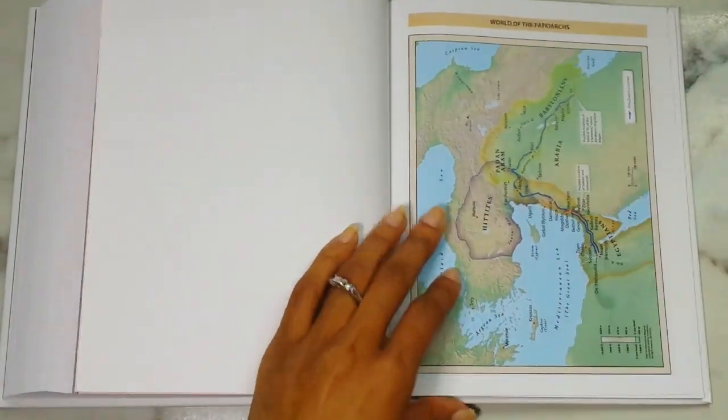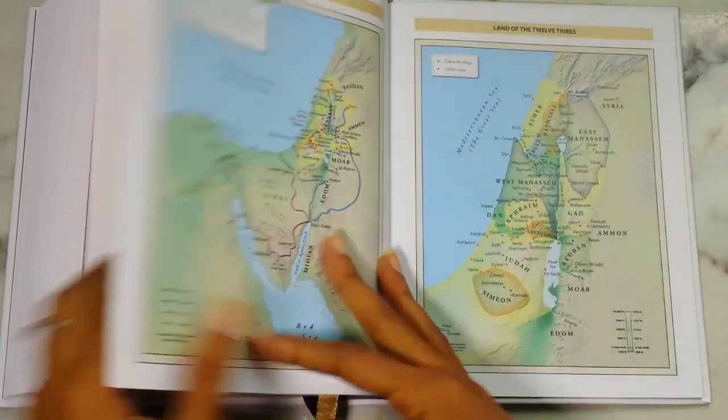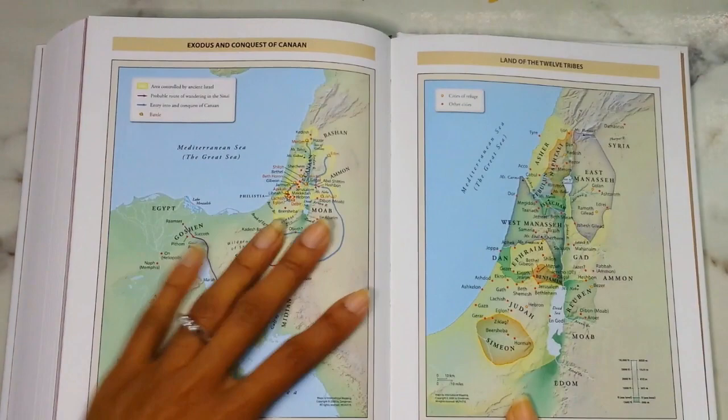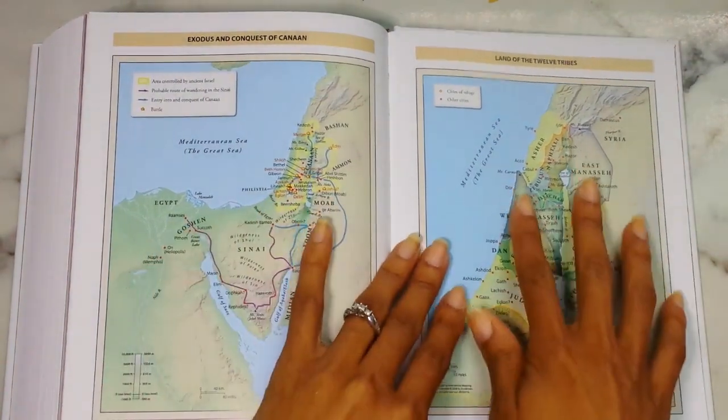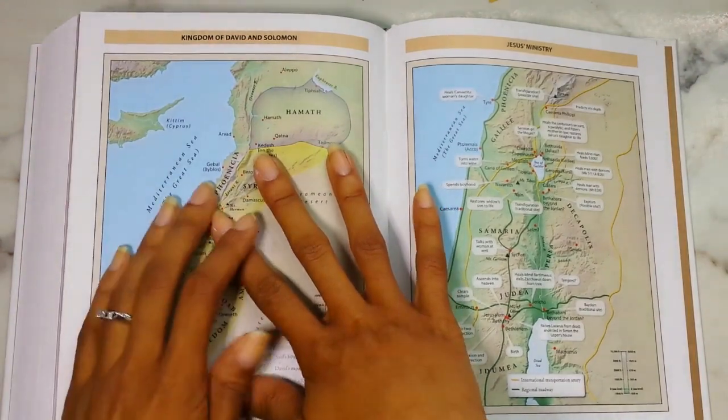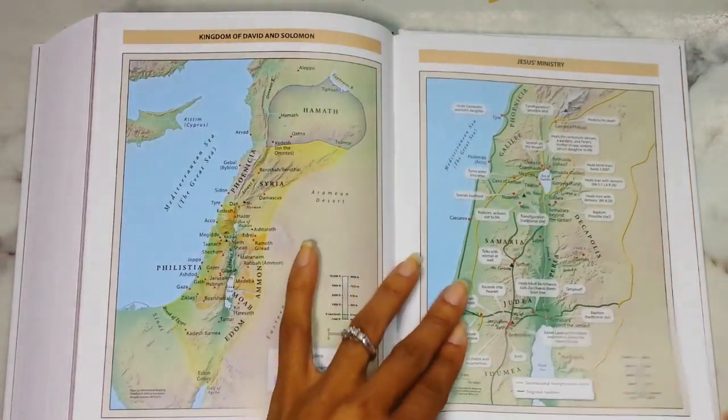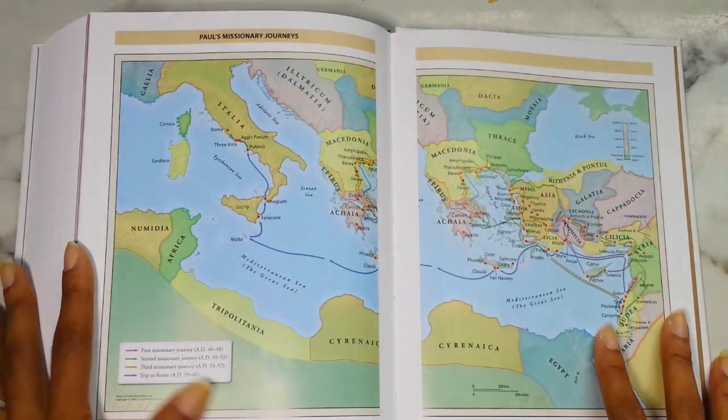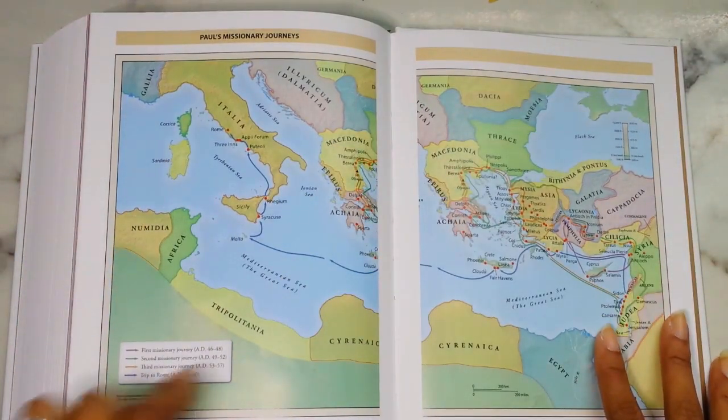And then you get into your maps after that, which you have the World of the Patriarchs, Exodus and Conquest of Canaan, Lands of the 12 Tribes, Kingdom of David and Solomon, Jesus's Ministry, Paul's Missionary Journeys—and then they're done with first, second, third, and his trip to Rome—and the last one is Christianity Spread in the First and Second Centuries.